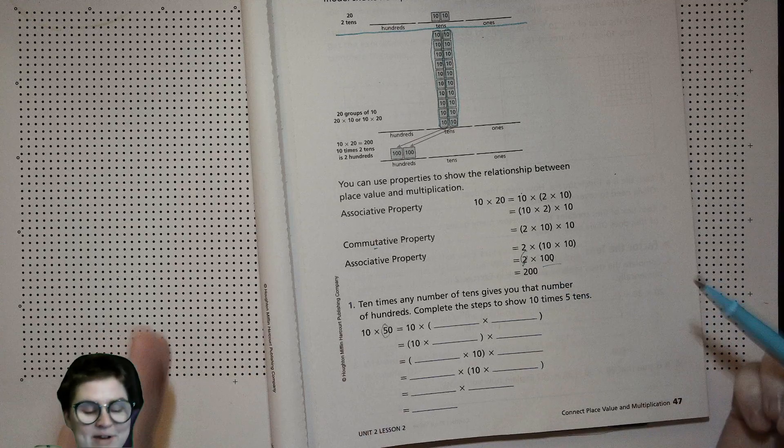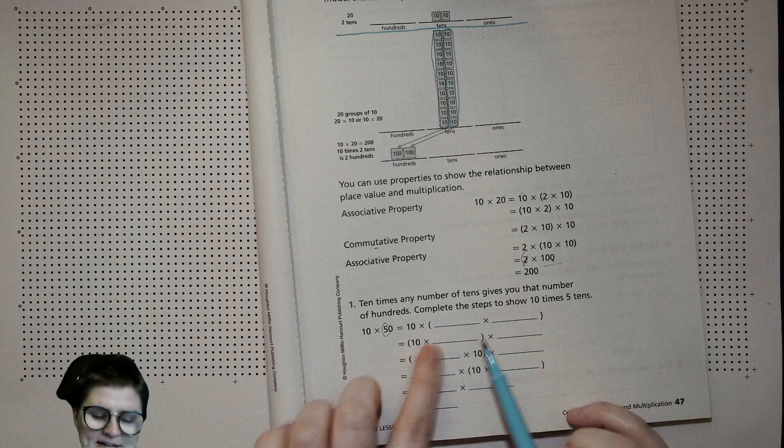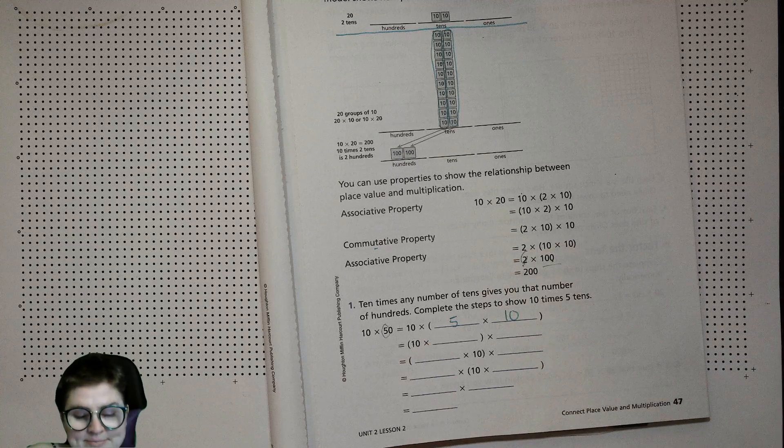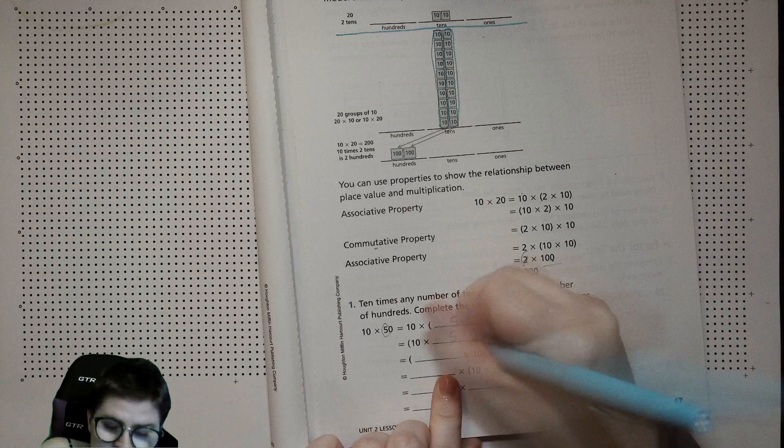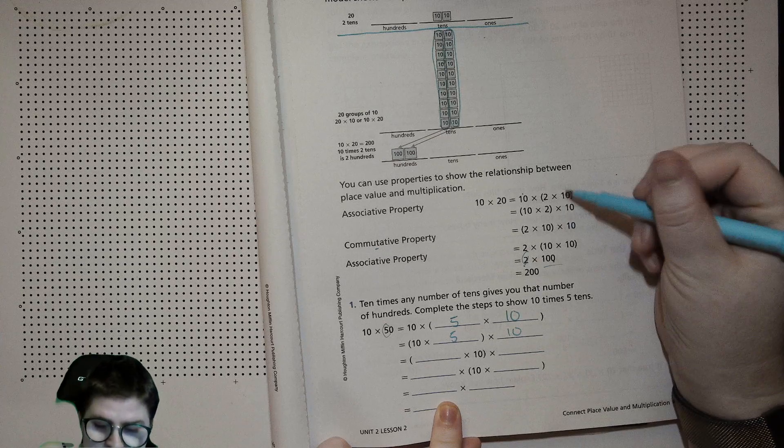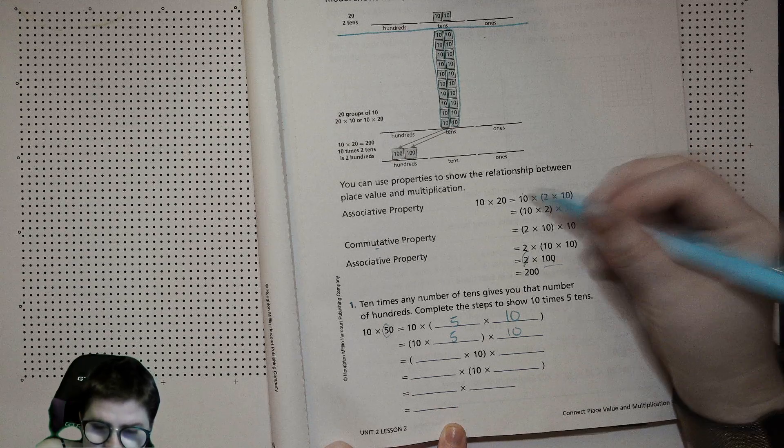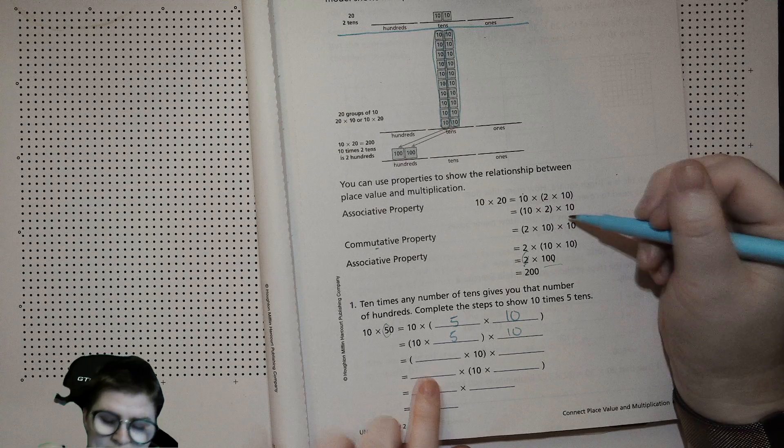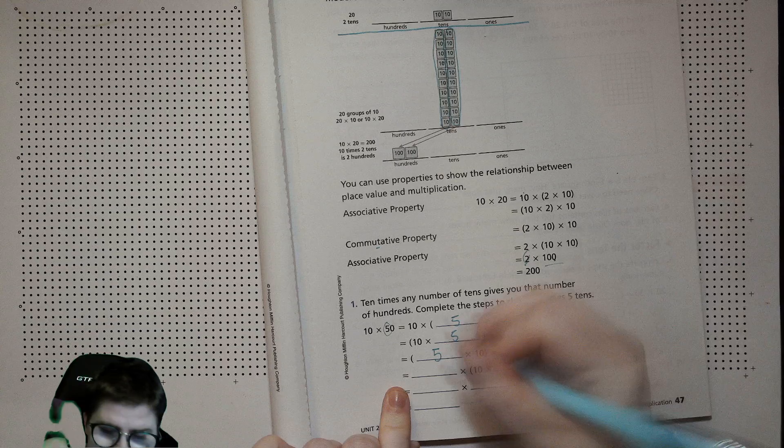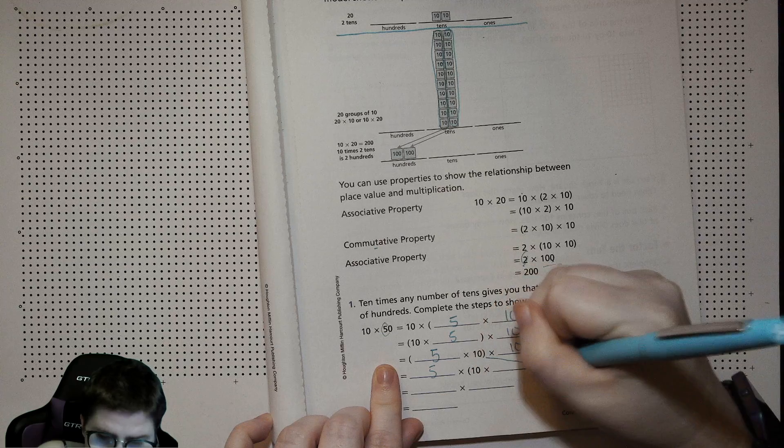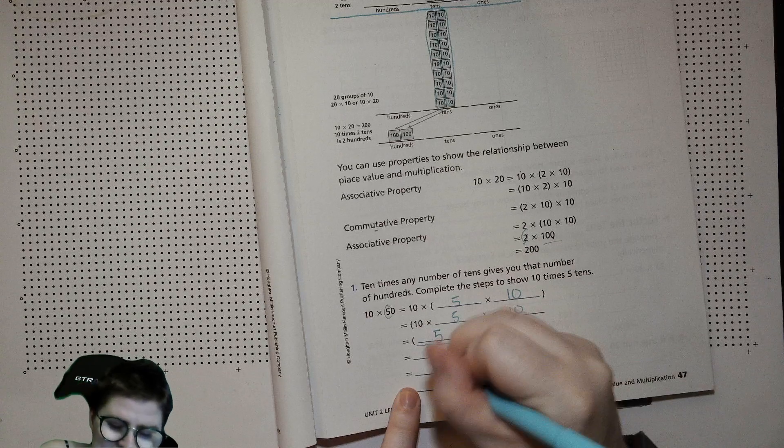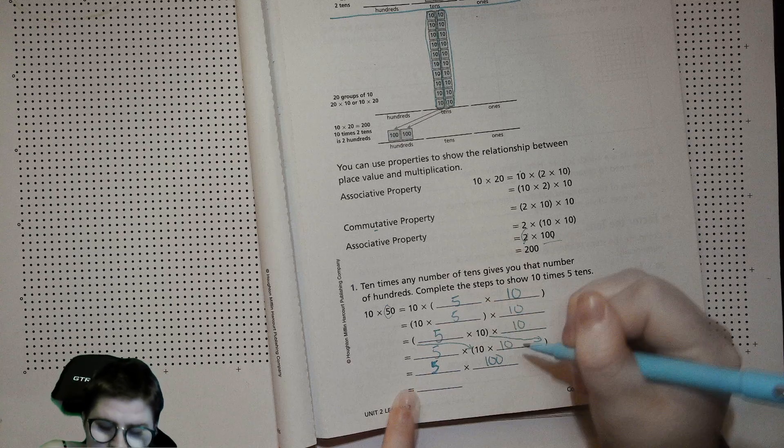So you know that 10 times 50 you could look at as 10 times (5 times 10). Then you can scoot that parentheses over so it's (10 times 5) times 10. Then you can move that 5 over so it's (5 times 10) times 10. Then you have 5 times (10 times 10), and then you have 5 times 100, and then you just have 500.